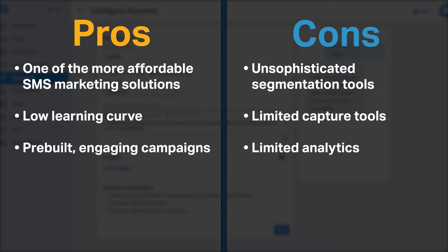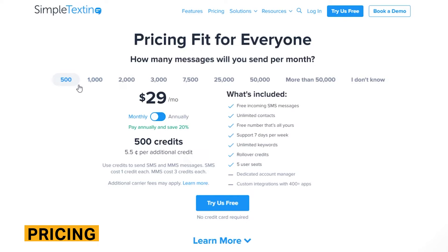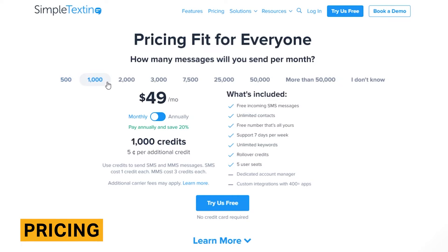It offers a multitude of pre-built engaging campaigns to choose from. On the other hand, segments can only be grouped with and/or statements, which limits targeted marketing. There are also few opportunities to capture subscriber data in Simple Texting, and its analytics tools are not the most robust.